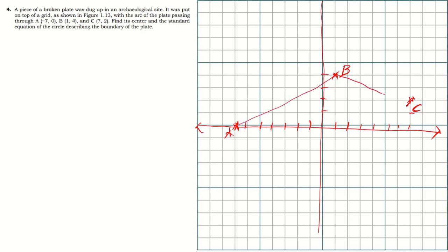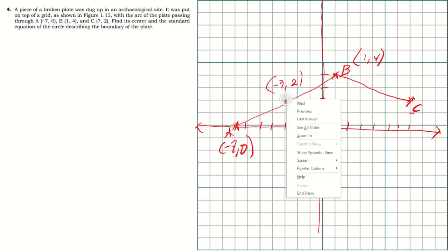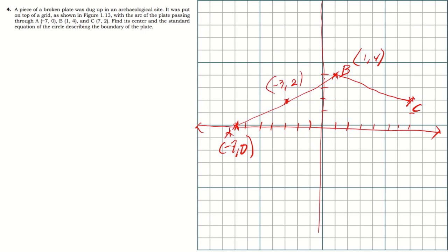To find the midpoint of chord AB with points negative seven, zero and one, four: we average the x-coordinates — negative seven plus one equals negative six, divided by two equals negative three — and the y-coordinates — zero plus four equals four, divided by two equals two. So the midpoint of AB is negative three, two.